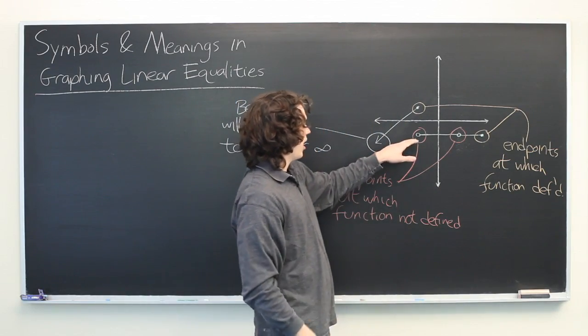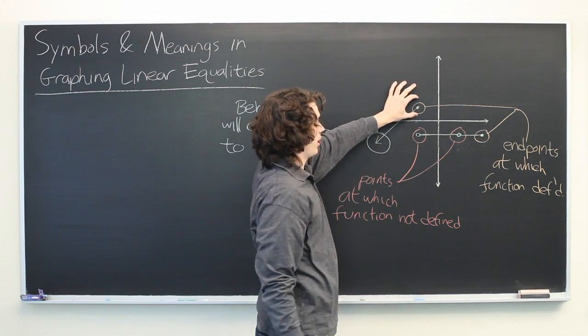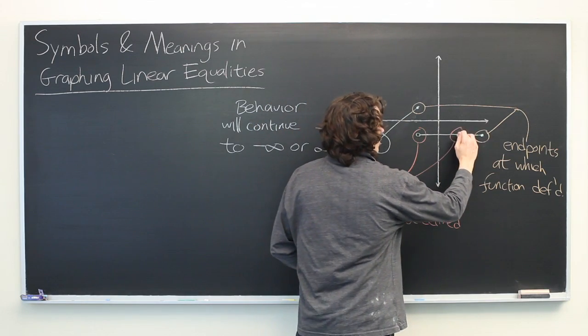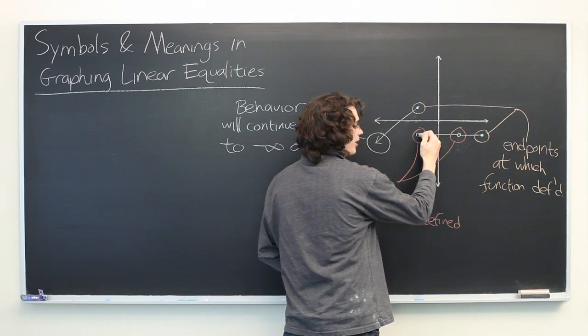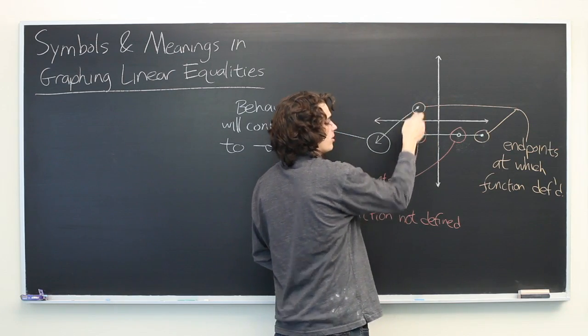So in this case, we see that this point directly above our open circle is defined, and this one is not. So if you're moving along this line, you can get infinitely close to this open circle. But as soon as you actually reach this x value, you jump up to this point.